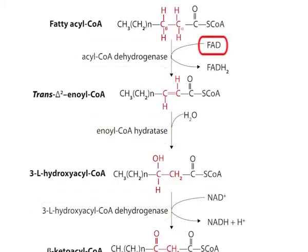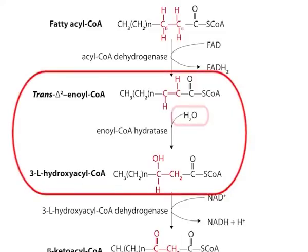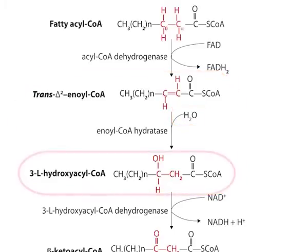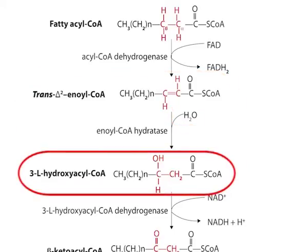These isozymes have FAD as a prosthetic group, which receives the removed electrons from the fatty acyl-CoA. The reduced FAD immediately donates electrons to an electron carrier of the mitochondrial respiratory chain, ETF, also known as electron-transferring flavoprotein. In the second stage, a water molecule is added to the double bond of the trans-delta-2 enoyl-CoA. This gives the L-stereoisomer of beta-hydroxyacyl-CoA, also known as 3-hydroxyacyl-CoA, by the enzyme enoyl-CoA hydratase.